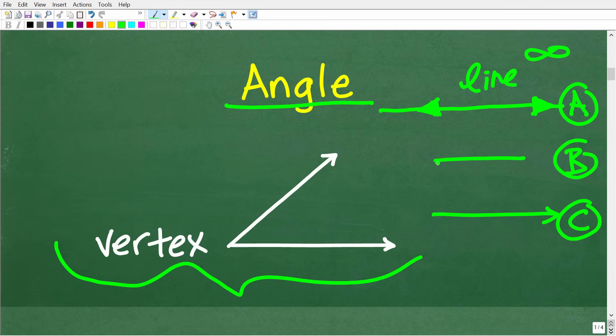Now, if you have something like this, this is called a line segment. So if I just kind of chop a little piece of this line right here, this is a line segment, and it has endpoints. In other words, it has a beginning and an end. All right, so this is a line segment.